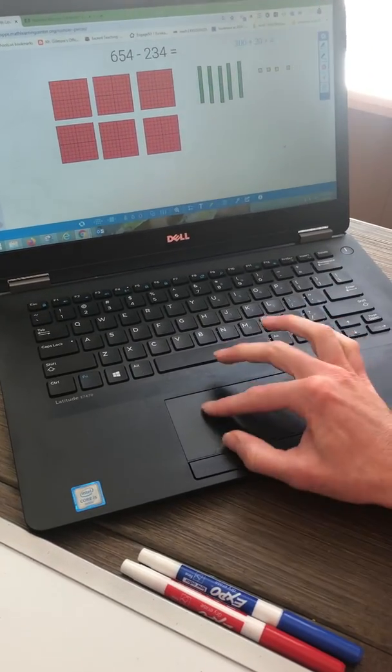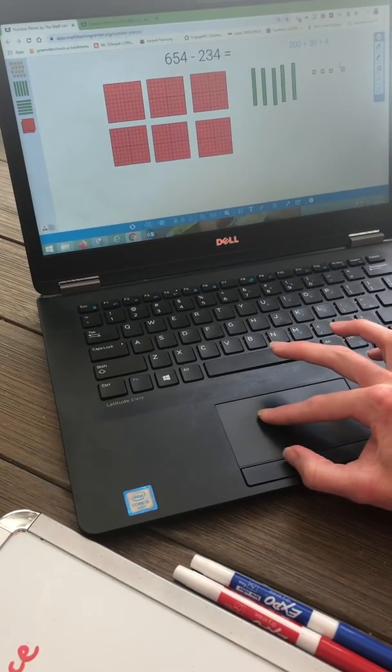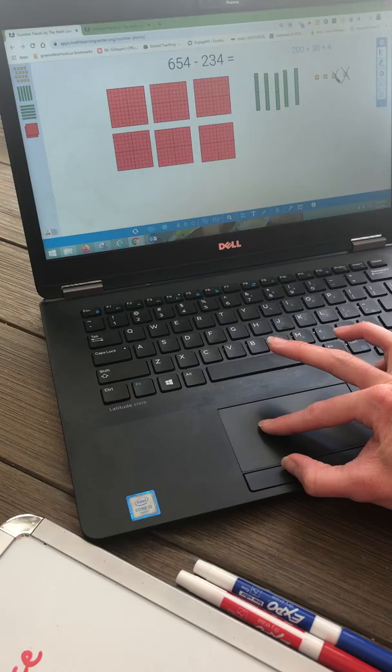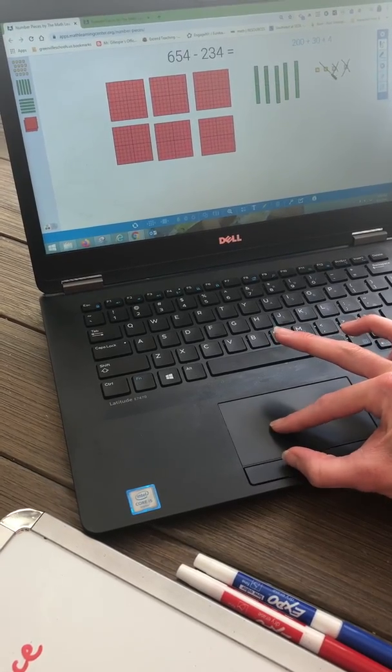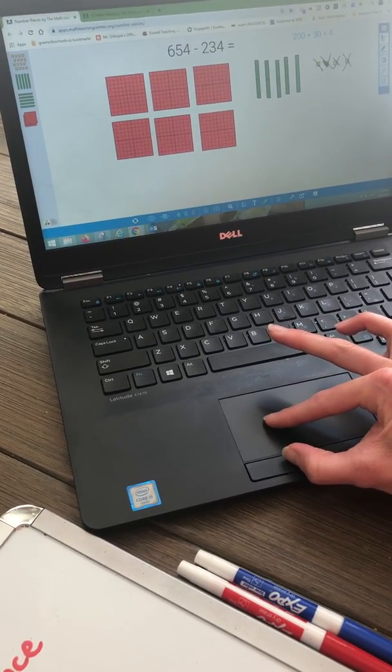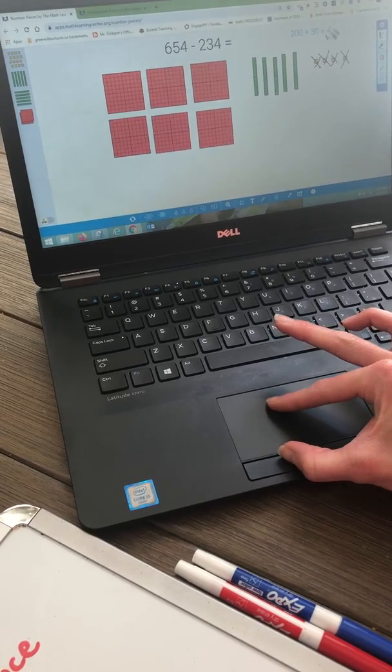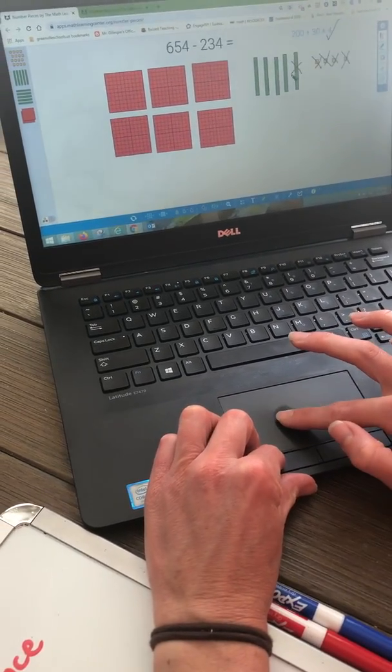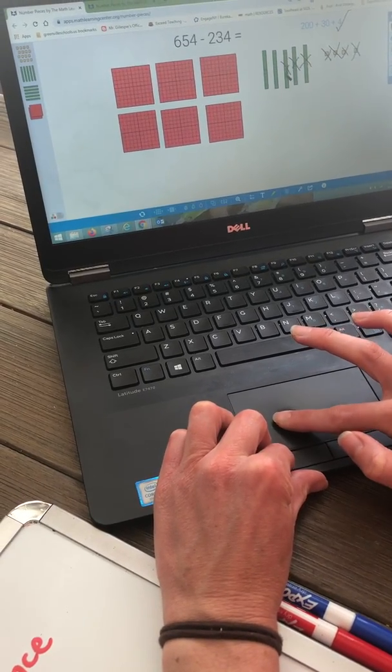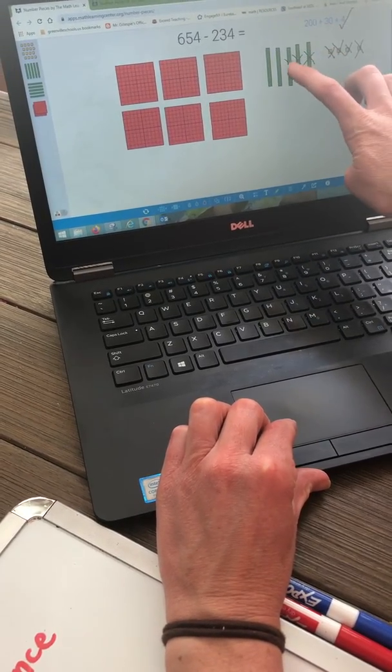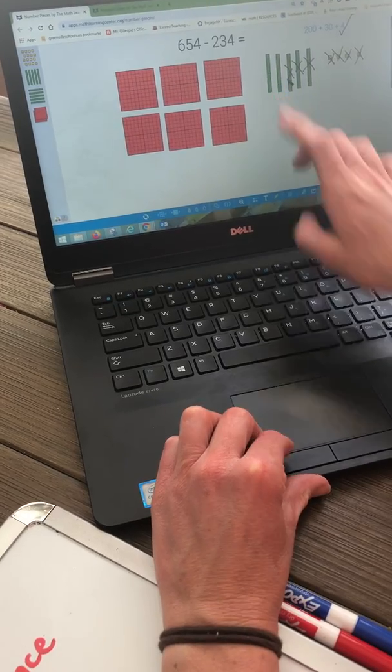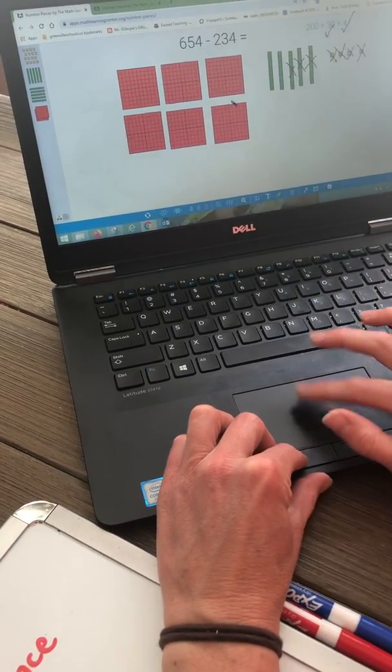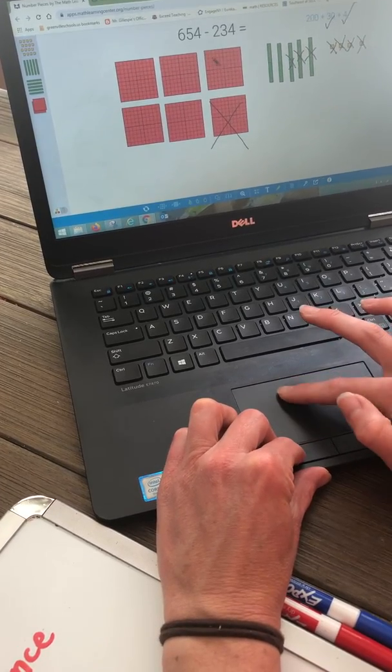Starting at the ones, I need to take away four ones. So one, two, and I'm just crossing them out to show that they are gone. Three, four. These four ones are gone. Now it's time to take away three tens. One, two, three. Three tens equals 30: 10, 20, 30. I have two tens left over. And now I need to take away 200. 100, 200.